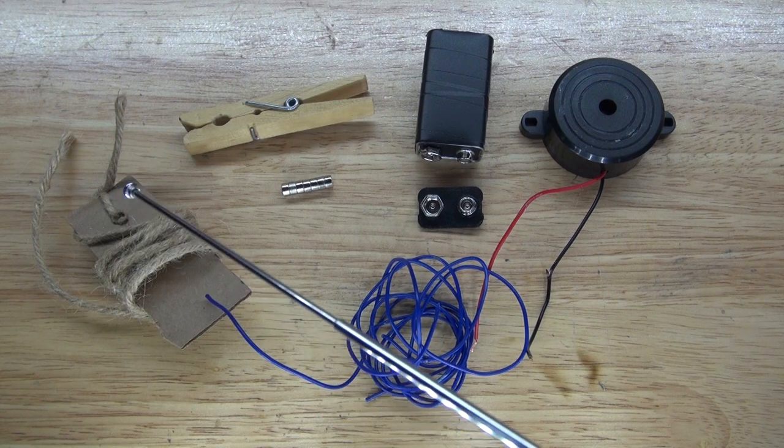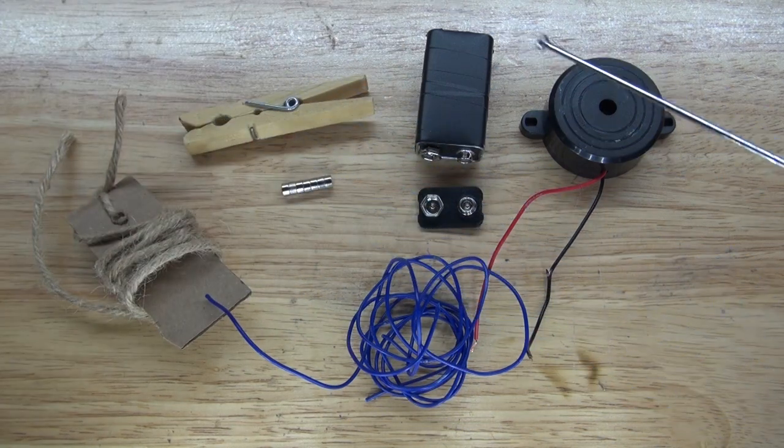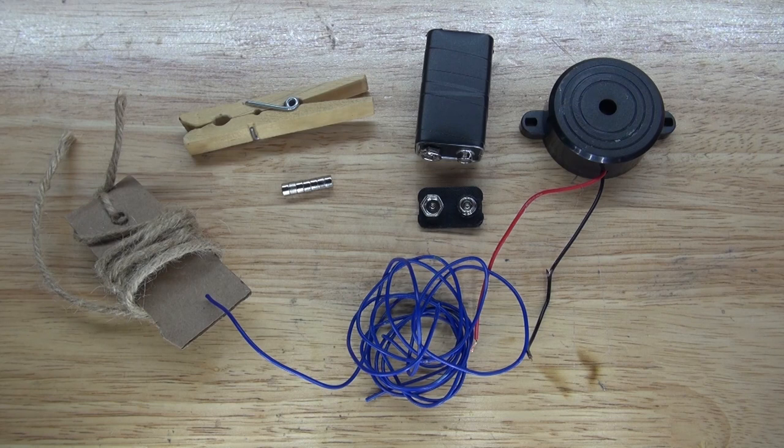And what this does is that when it's attached to the clothespin and you pull it, it'll sound the alarm. When this clothespin closes, it'll trigger this passive buzzer to sound the alarm. Now let's go ahead and assemble the circuit, and let's get started.